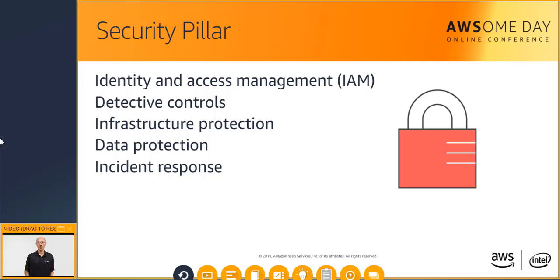Infrastructure protection is designed to ensure systems and services within your architecture are protected against unintended and unauthorized access. For instance, users can create network boundaries, highlighting and patching operating systems, managing users, keys, access levels, and application firewalls or gateways.